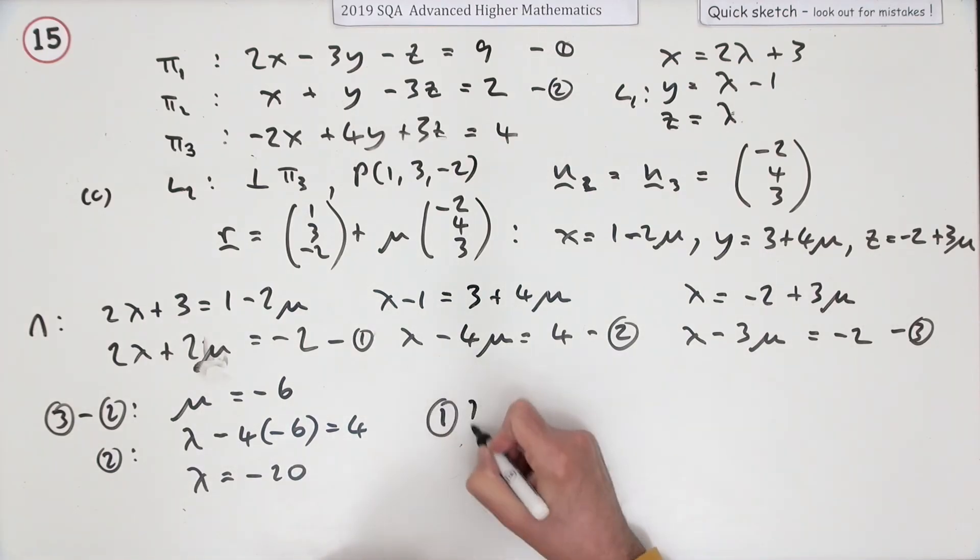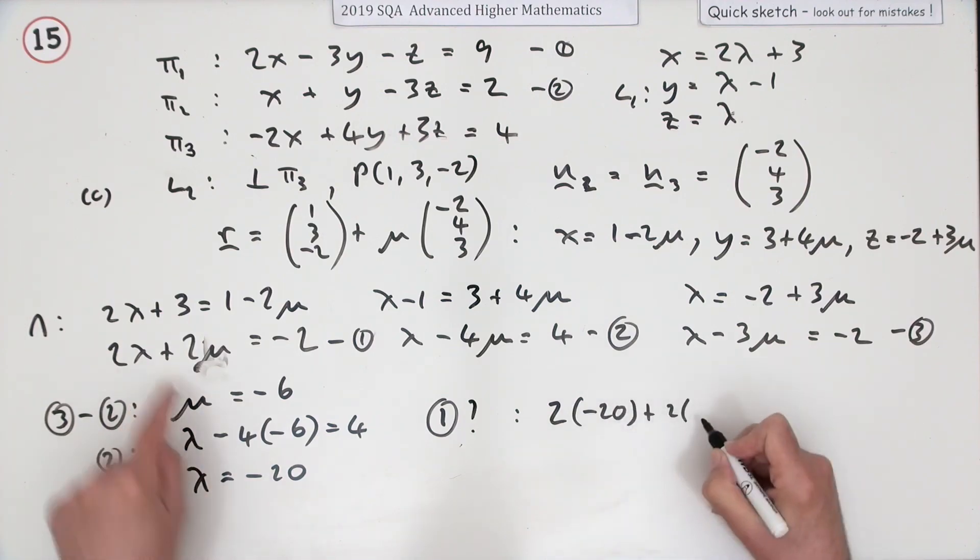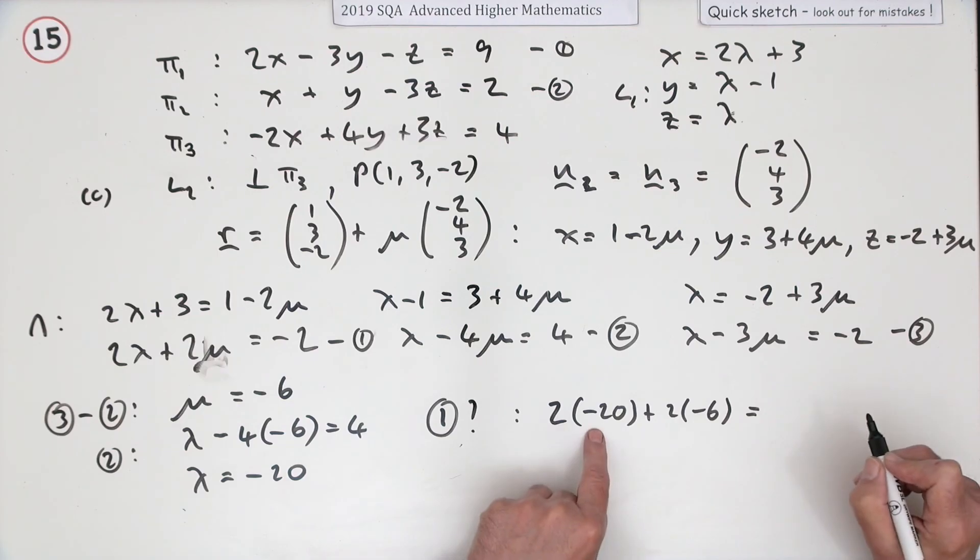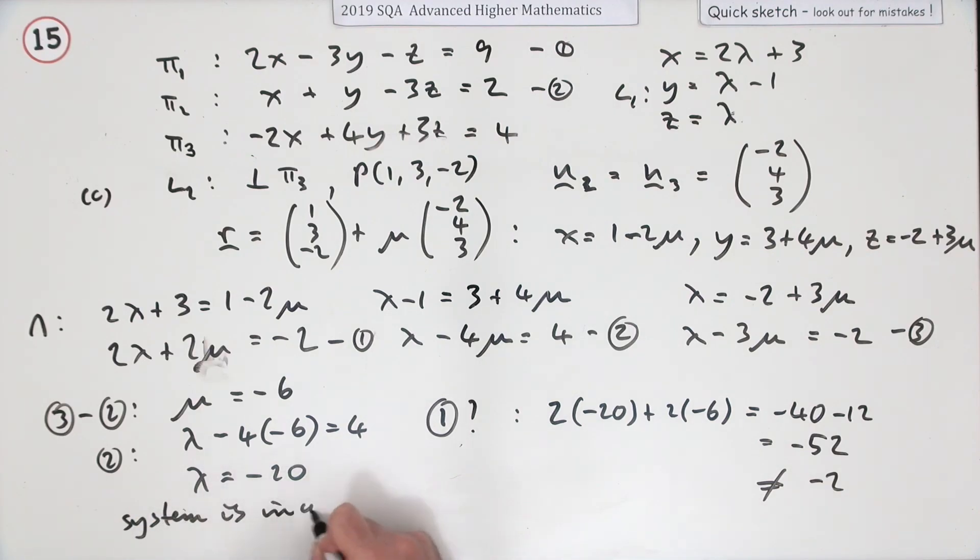Now, the question is, does that satisfy number one? Is it consistent? So, put it into it. 2 times -20 plus 2 times -6. Doesn't look like it at all. That's -40 minus 12 is -52. Well, that certainly doesn't come to -2. That means the system is inconsistent. System is inconsistent, which means L1 does not intersect L2.